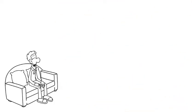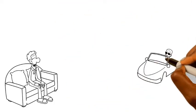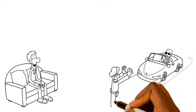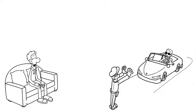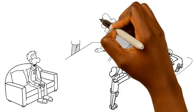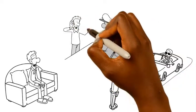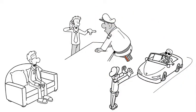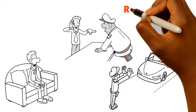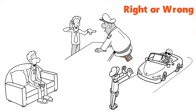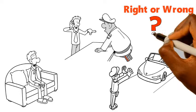Scenario 9. A celebrity is stopped by the police for a traffic violation. Asked to show his driver's license, he makes a phone call to the officer's boss who asks for his release. Is this right? Why is this right or wrong?